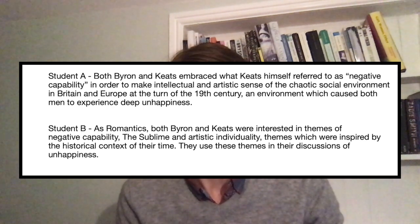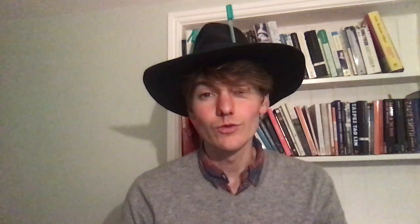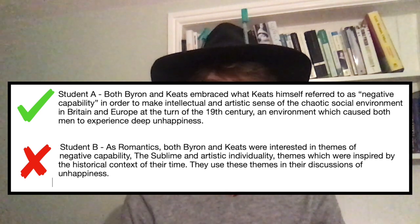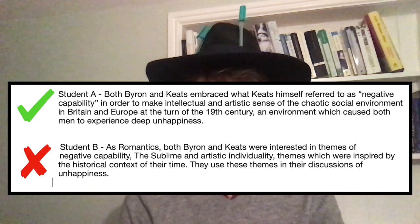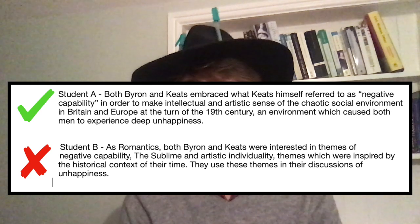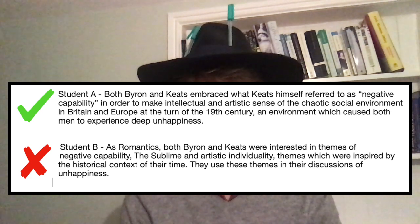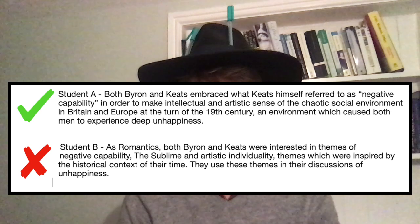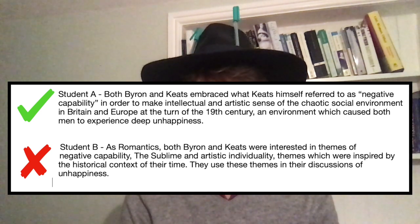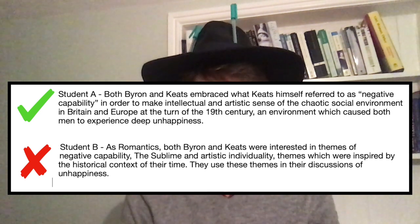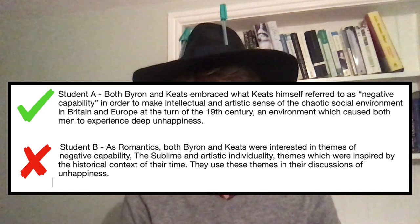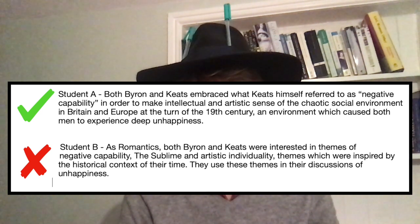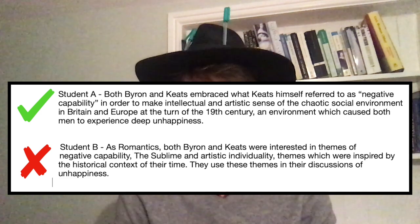Student B continues: 'They used these themes in their discussion of unhappiness.' With my examiner's hat on, my impression of Student A is that they have a deep enough knowledge of the Romantic movement to have chosen a very specific line of argument relating to both Byron and Keats about their negative capabilities. My impression of Student B is that they haven't really thought about the question in enough detail and have panicked, brain-dumping all of the big Romantic concepts they know into their first sentence. This makes a much less precise, very waffly argument.